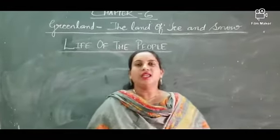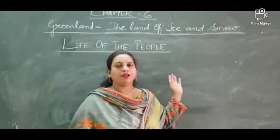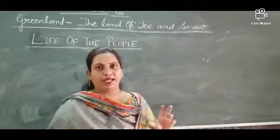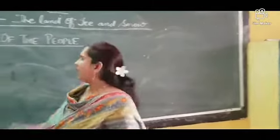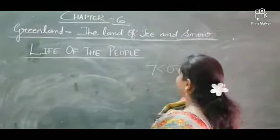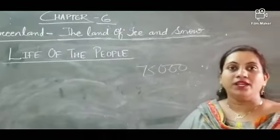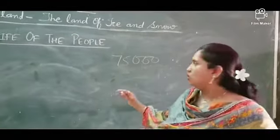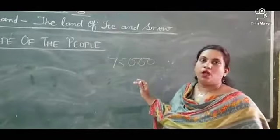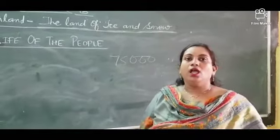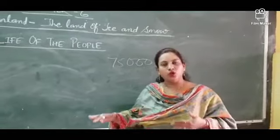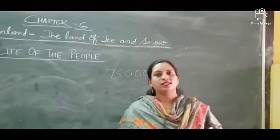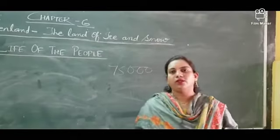Good morning dear students. Today we are going to see the last topic of Greenland, that is life of the people. The total population of Greenland is 75,000. From this 75,000, only 80 persons are Eskimos. Around 1,000 years ago, people from North America came to Greenland and settled here.